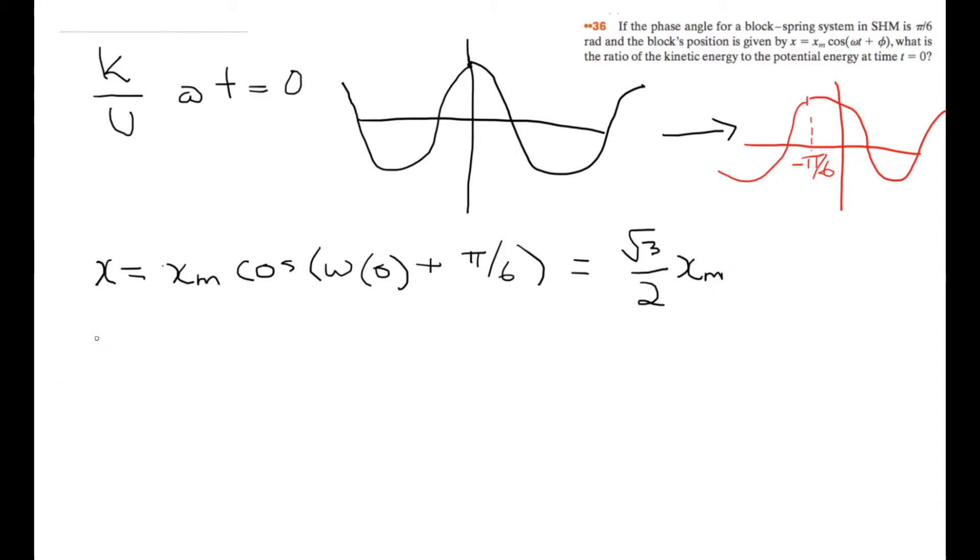We know that energy in simple harmonic motion is always constant, and it's equal to kinetic energy plus potential energy. The mechanical energy is always constant. This is equal to ½k times the amplitude squared. So what we have to do is find the new potential energy at time t equals 0 in relation to the energy of the system.